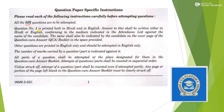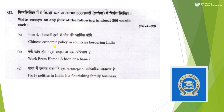Question number one will be printed in both Hindi and English, and you can answer it in either language — you will select this preference when filling the form. However, all other questions from Question 2 to Question 6 must be answered in English only. There will be no translation provided for those questions.